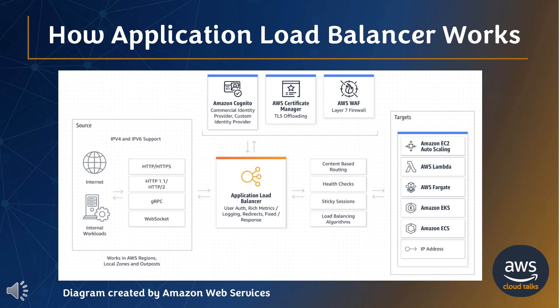Now let's see how Application Load Balancing works. Elastic Load Balancing, ELB, automatically distributes incoming application traffic across multiple targets and virtual appliances in one or more availability zones. The diagram created by Amazon Web Services shows the key features of Application Load Balancer and integrations with other AWS services. We recommend you read the diagram to get a better understanding of how Application Load Balancer works in a typical application environment.